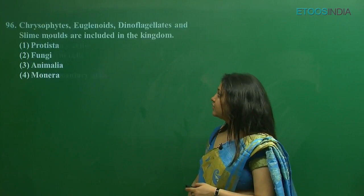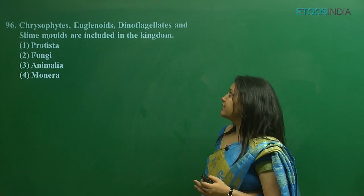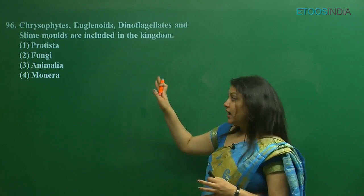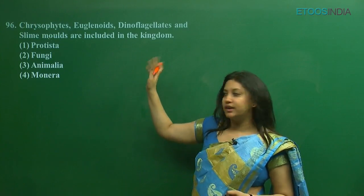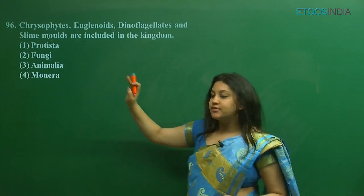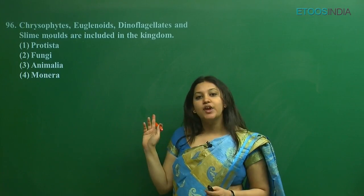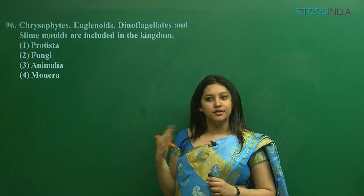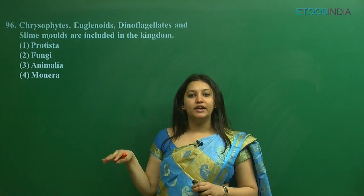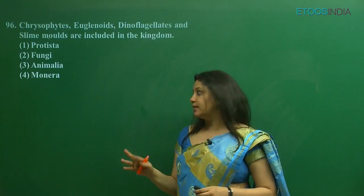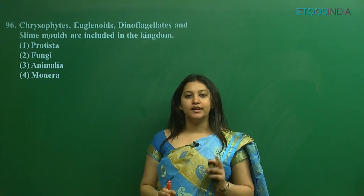The next question is: chrysophytes, euglenoids, dinoflagellates, and slime molds are included in which kingdom? This directly asks which kingdom they belong to. The first is the correct option — they are in Protista. All four groups: chrysophytes, euglenoids, dinoflagellates, and slime molds fall under Protista. In Fungi you have ascomycetes, basidiomycetes, deuteromycetes, phycomycetes. In Monera you have eubacteria, archaebacteria, rickettsia, etc.